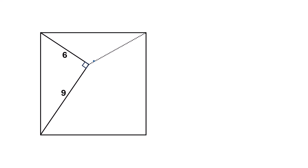So we have to find this distance. Consider the square as A, B, C, D and this point as E. Now if this angle is theta and this angle is alpha, then alpha plus theta will be 90 degrees, because this angle is 90 degrees. Again, as this is a square, so this angle and this angle will be 90 degrees, so as this is alpha, this will be theta.